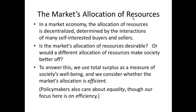Once we understand total surplus — which is consumer surplus plus producer surplus — we can analyze the market. There are two types of analysis in welfare economics or economics in general. The first is called positive economics, which describes what it is. We use total surplus to measure this. When analyzing market efficiency or allocation of resources, what it is — is total surplus, which equals consumer surplus plus producer surplus.